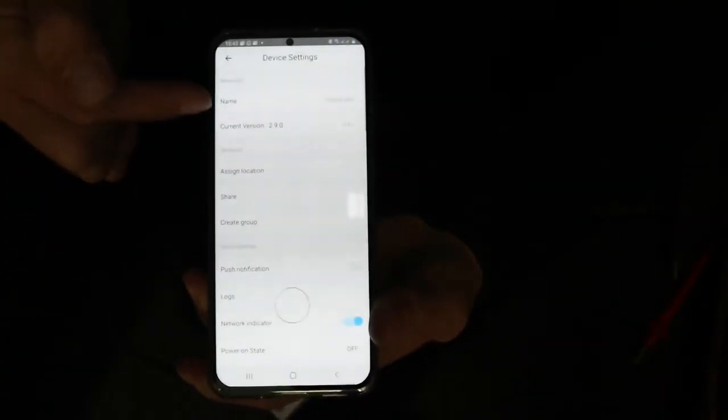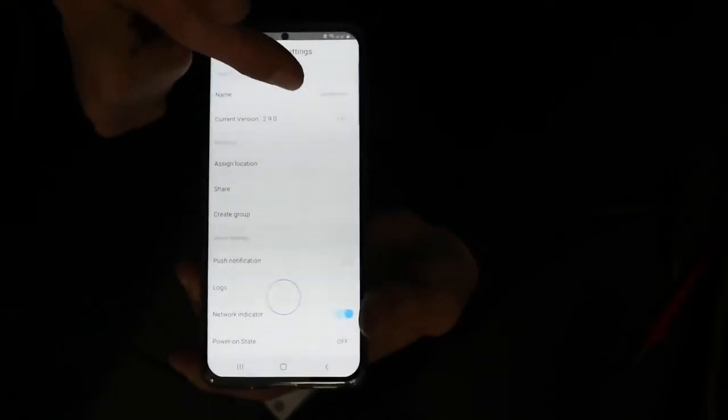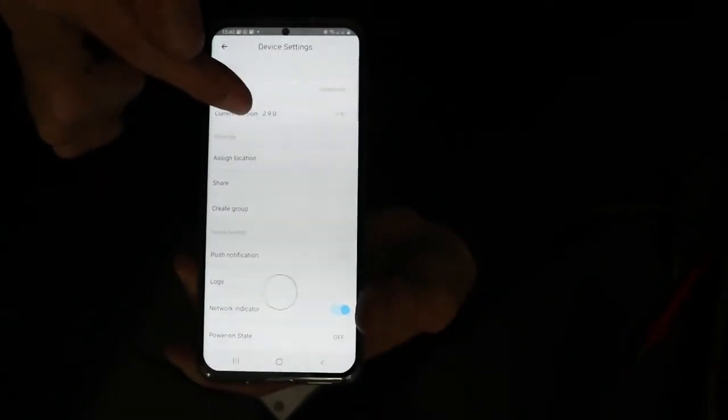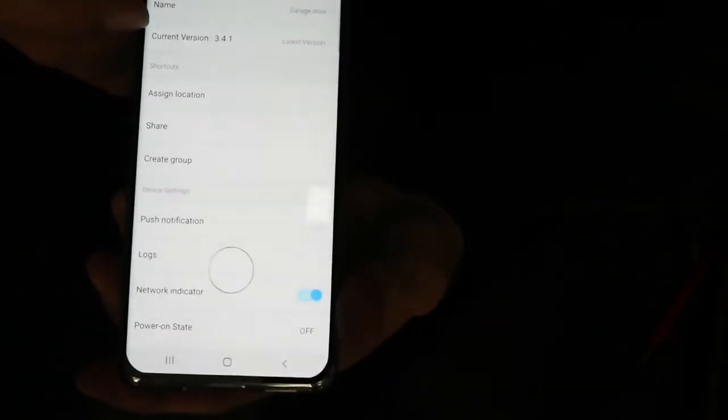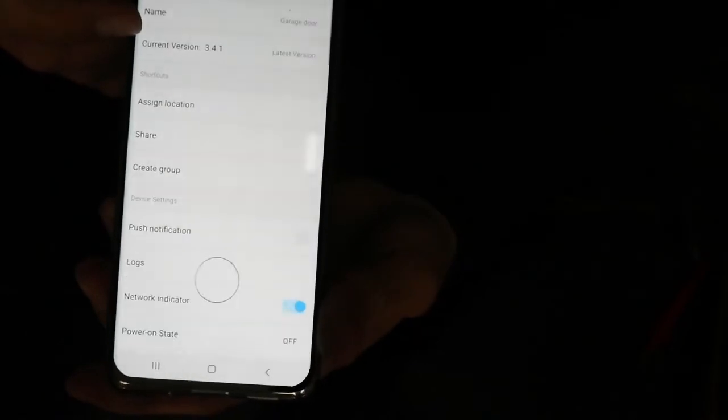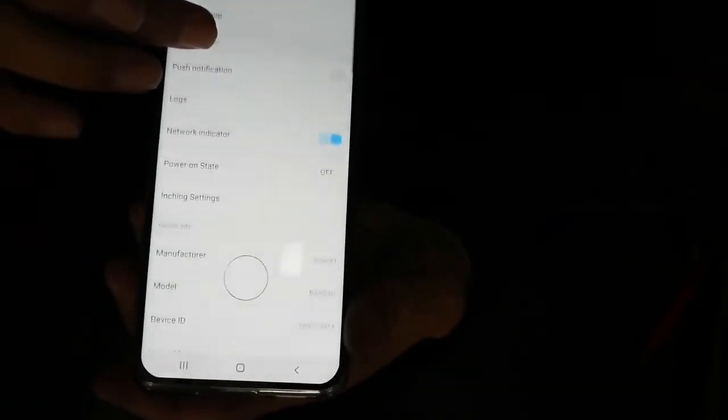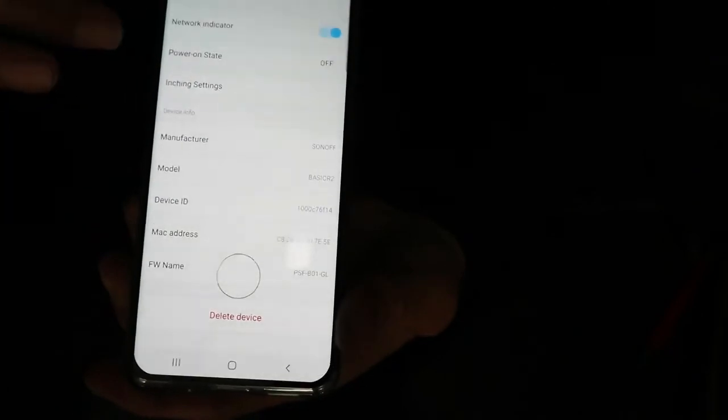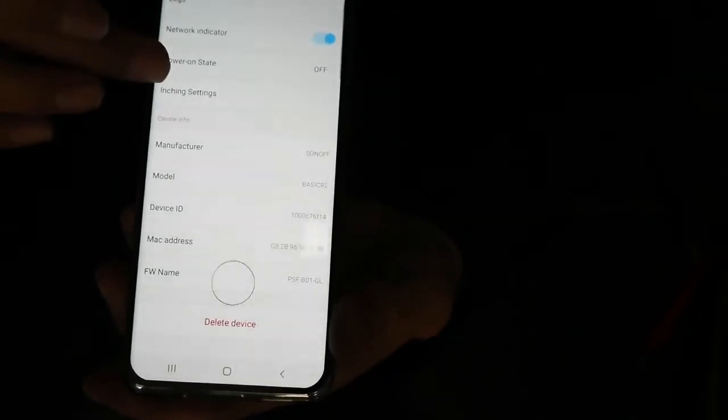With that done, you can now see that the current version of the software is 3.4.1, which is the latest version. I can scroll down to the bottom where it says inching settings. I can tell it to inch for 0.5 seconds, so I'm going to enable the inching function over there. Just to show you, you can do lots of time up to very long, way longer than what we actually want.